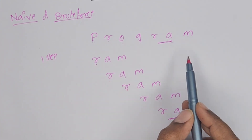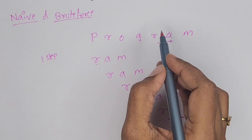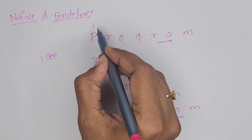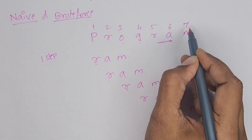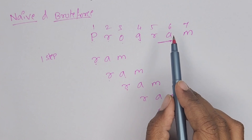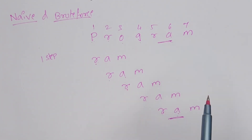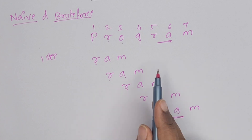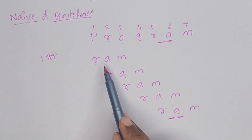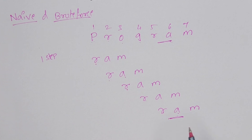Like this, we find out whether the pattern is present in the string or not. The characters are numbered 1 through 7 — total seven characters. From position 5 to 7, the pattern is present. Coming to advantages: this is a very simple method. If the pattern is not matching, every time we move one step to the right side.